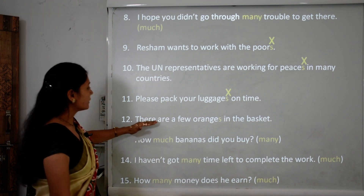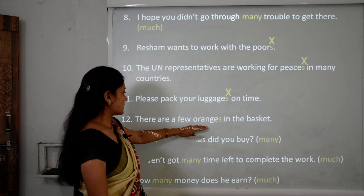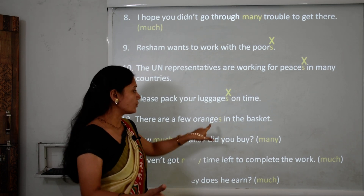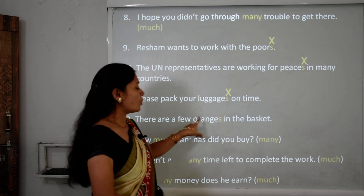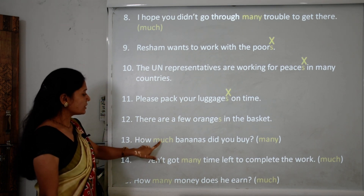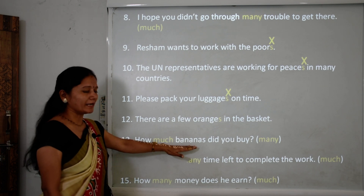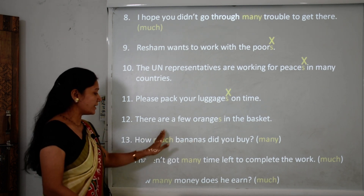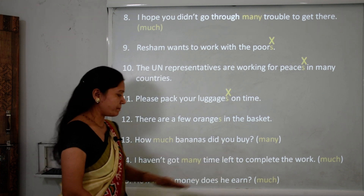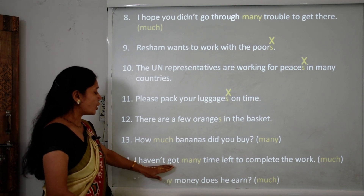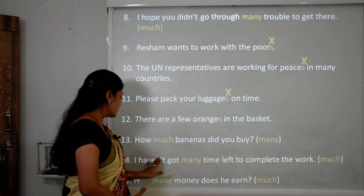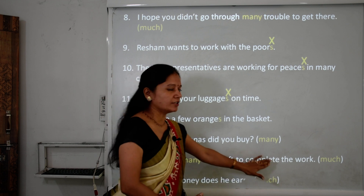Sentence 12: 'There are a few orange in the basket.' Orange is a countable noun, so we add S — 'oranges.' The corrected sentence is: 'There are a few oranges in the basket.' Sentence 13: 'How much bananas did you buy?' Bananas are countable, so we use 'many,' not 'much.' Sentence 14: 'I haven't got many time left to complete the work.' Time is uncountable, so we use 'much.' The correct sentence is: 'I haven't got much time left.'